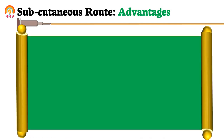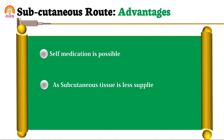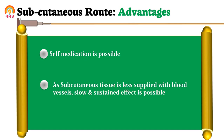Now we discuss advantages of the subcutaneous route. The first advantage is that self-injection or self-medication is possible, as there is no need for very deep penetration. The second advantage is that drug is absorbed slowly and a sustained action is possible by this route, because subcutaneous tissue has very limited capillary supply — meaning drug is absorbed slowly but produces a long duration of action.